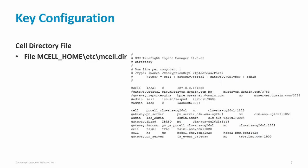The command mgetinfo with the param option can be executed against the running cell and will display the configuration parameters and their values. The first part of the output shows default values and the second part shows the overridden or changed ones — that is why you may see duplicate parameter names in the output. The cell directory file is called mcell.dir and is in the ETC directory. There will be an entry for the cell itself as well as all other cells, servers, and gateways it needs to connect to. Each entry contains a type, name, encryption key, host, and port information.